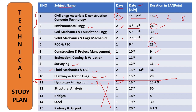Next is Structural Analysis — one day. Important topics: determinate and indeterminate structures, deflections, trusses, arches, and influence line diagrams for different point loadings. Next is Bridge Engineering — types of bridges, highway and railway bridge codes, and bearings; one day is more than enough. Then Steel Structures — bolted and welded connections, and built-up connections. Finally, Railway and Airport Engineering — railway gauges (broad gauge, meter gauge), track components, points and crossings, runway length correction, and airport design standards.